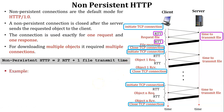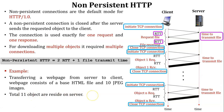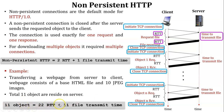For example, transferring a web page from server to client where the web page consists of a base HTML file and 10 JPEG images — that is 11 total objects on the server. The non-persistent HTTP response time for 11 objects equals 22 RTT plus 11 file transmit times. Therefore, non-persistent HTTP connection is a waste of time and a waste of server resources.